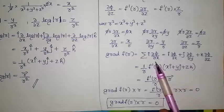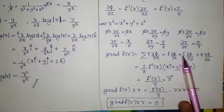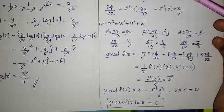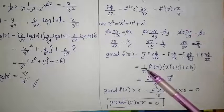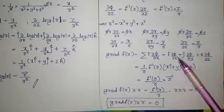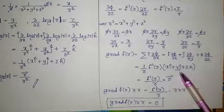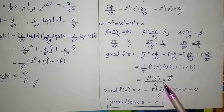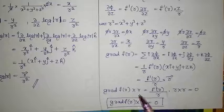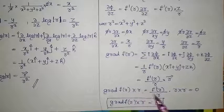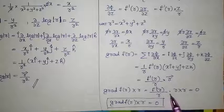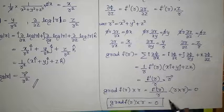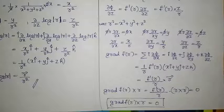The summation of i · ∂π/∂x can be written as i · ∂π/∂x + j · ∂π/∂y + k · ∂π/∂z. So gradient f(r) cross r = (f'(r)/r) · r × r = 0, since r cross r equals zero by cross product. Therefore, ∇f(r) × r = 0.